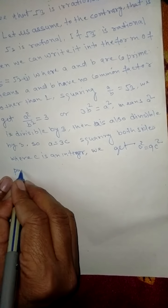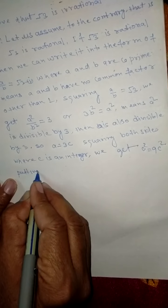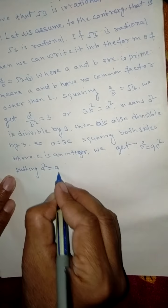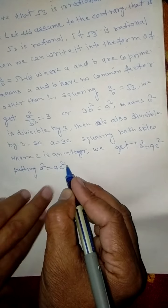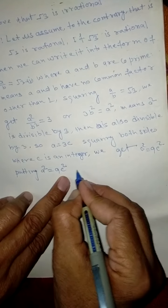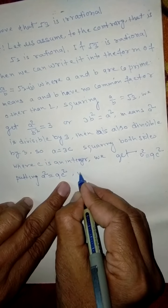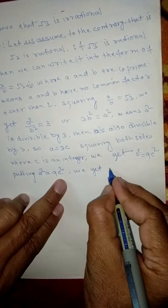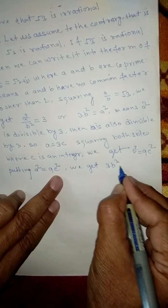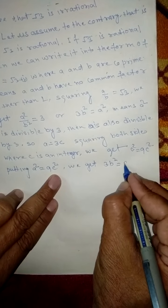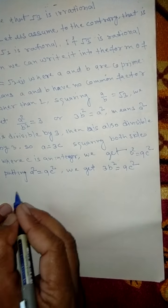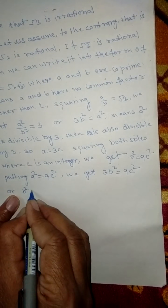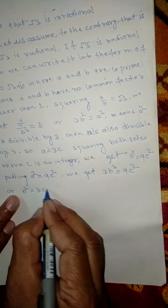Putting A square is equal to 9C square, we get 3B square is equal to 9C square, or B square is equal to 3C square.